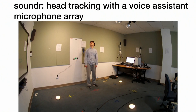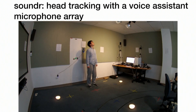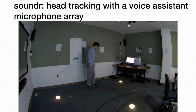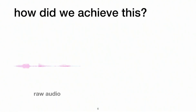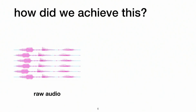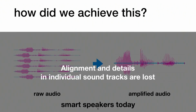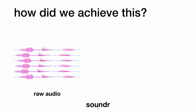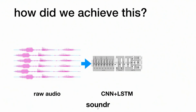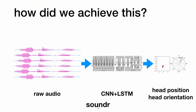All of this is done only with the microphone array, which is a similar microphone array embedded in all the smart speakers you have at home. "Turn off this light." So let's see how we achieve this. The microphone array receives raw audio data — a lot of audio data because it has multiple microphones. Traditionally that was used for beamforming to amplify the signal-to-noise ratio. But with that alignment, they dump out all the alignment details in individual soundtracks. What we do instead is feed this raw audio into a neural network and then infer the position and orientation of the user.